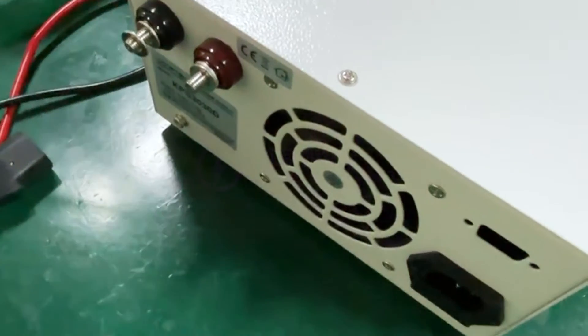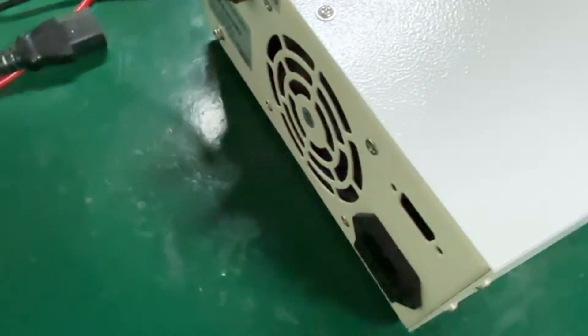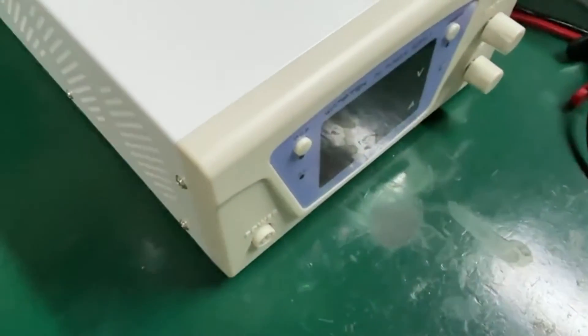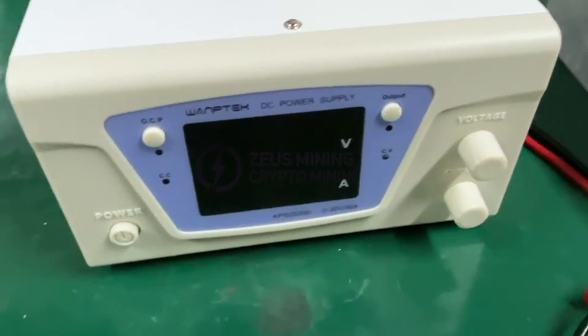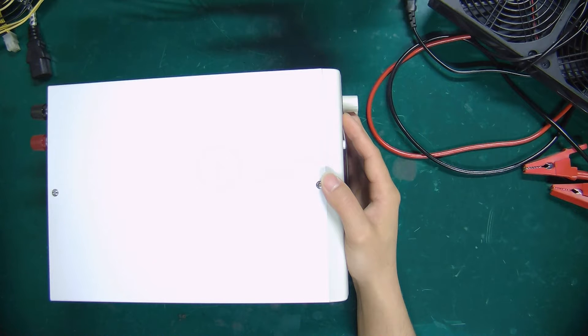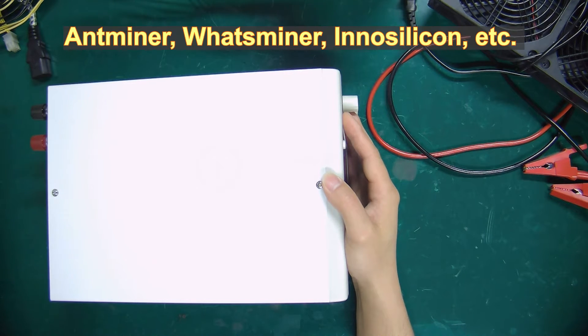During the repair of hash boards, if use a test fixture to check the hash board, we need to use this regulated PSU to power the hash board. The output voltage and current of this power supply are stable, which will not cause damage to the hash board. It can be used for testing hash boards like AntMiner, WattsMiner, Innosilicon, etc.